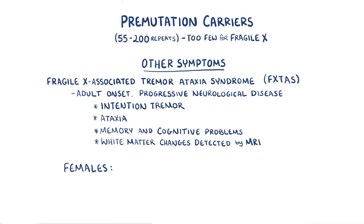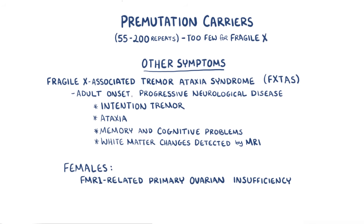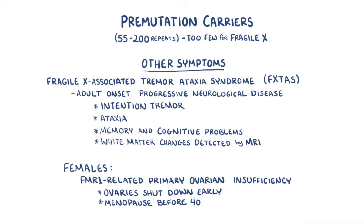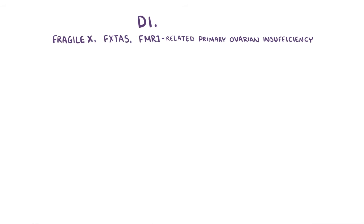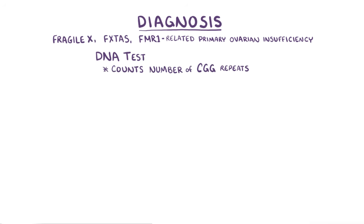Female pre-mutation carriers can also get FMR1-related primary ovarian insufficiency, where the ovaries shut down early and menopause starts before age 40. Fragile X, FXTAS, and FMR1-related primary ovarian insufficiency are diagnosed by a DNA test that counts the number of CGG repeats.